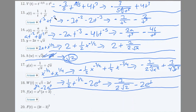Number 19: f(x) = x³(x + 3). Multiply out to get x⁴ + 3x³. Derivative: 4x³ + 9x².